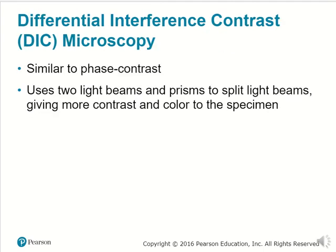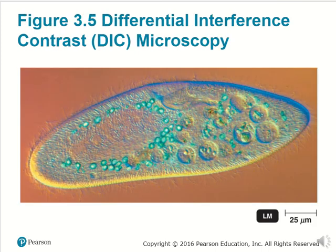Differential interference contrast, or DIC microscopy, is similar to phase contrast. What it does is use two light beams and a prism to split the light beams, which helps give more contrast and color to the specimen you're looking at.